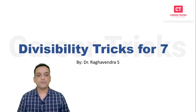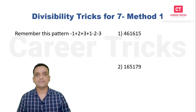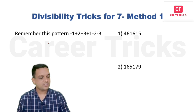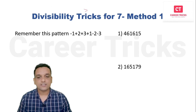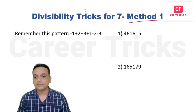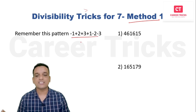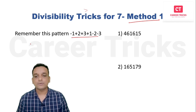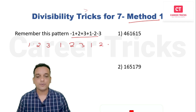Before moving to the first problem, we have to know the pattern we are going to use for checking divisibility by seven. In the first method, we are going to remember this pattern. We have to write the series of numbers like one, two, three — one, two, three — as a sequence in a row.